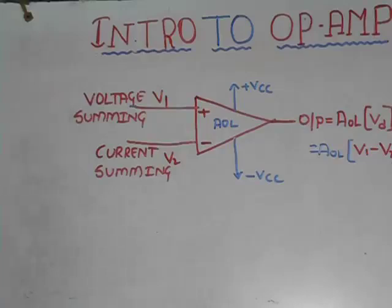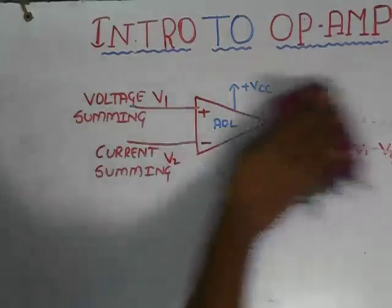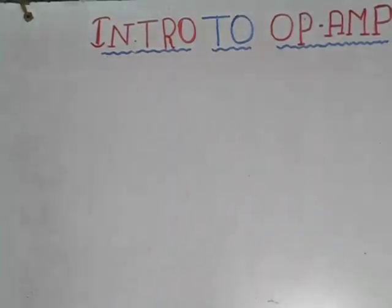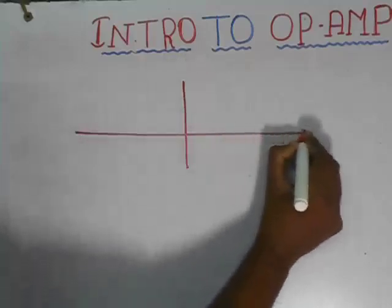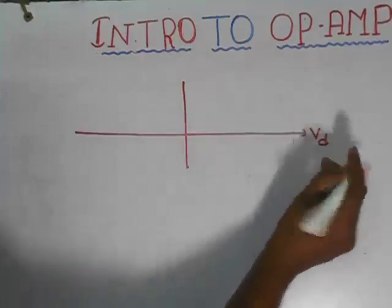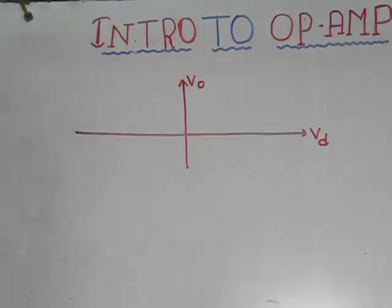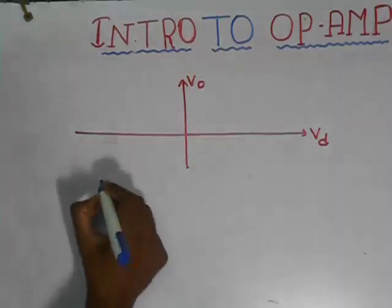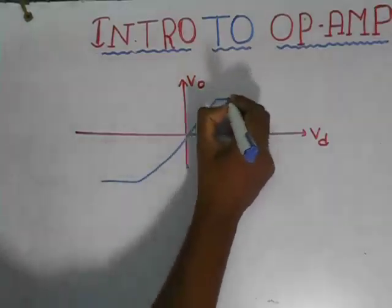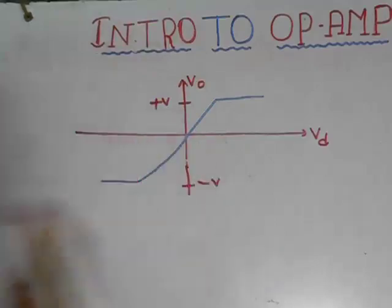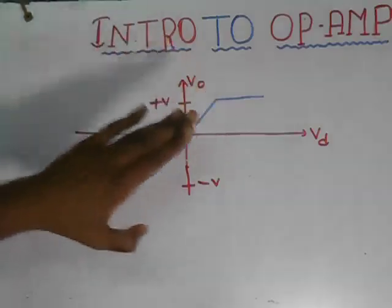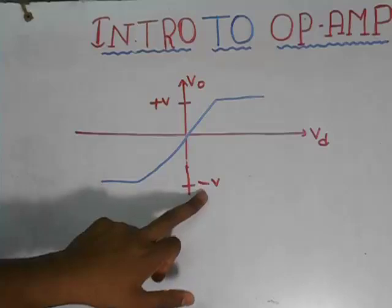Transfer characteristics are a graphical representation between the input and output of any device. For the op-amp, the transfer characteristics show the graph between VD (the differential input voltage) and Vout. The graph shows that the operational amplifier switches only between plus V and minus V, which are the power supply voltages provided to it.